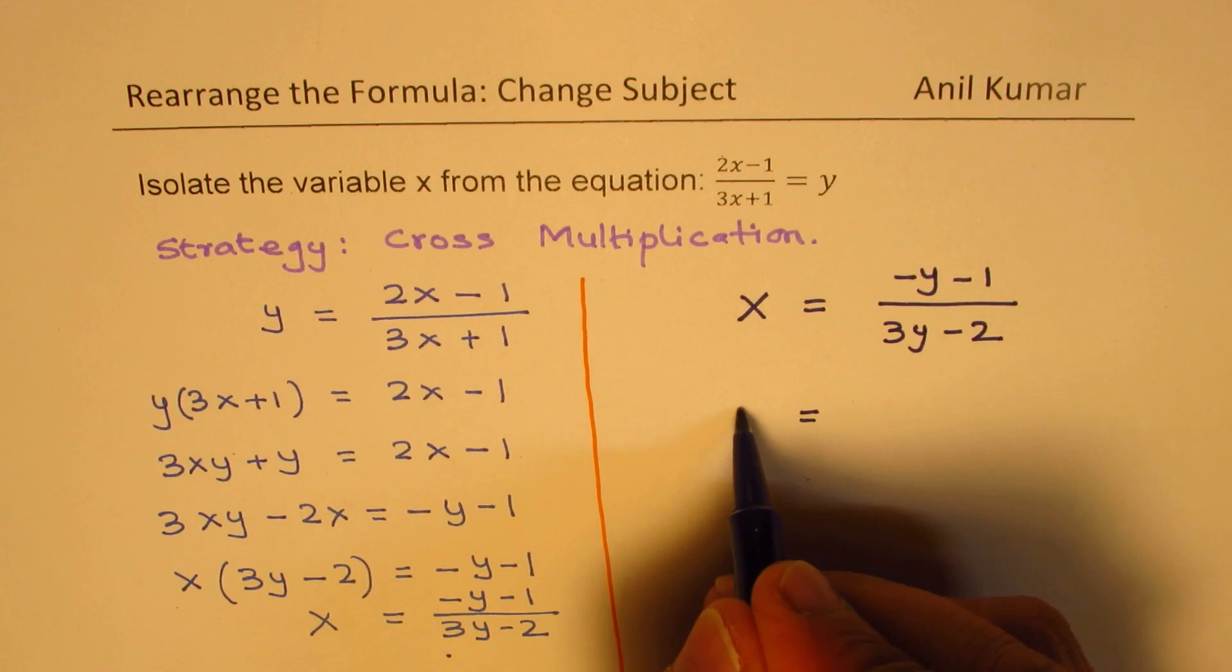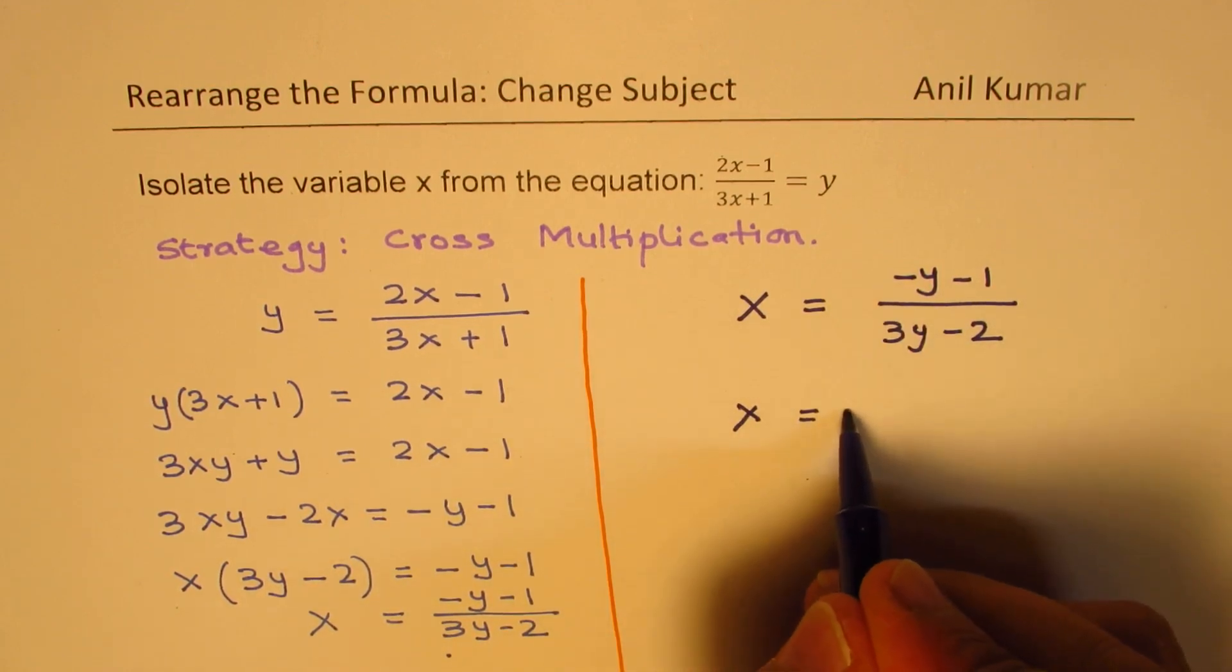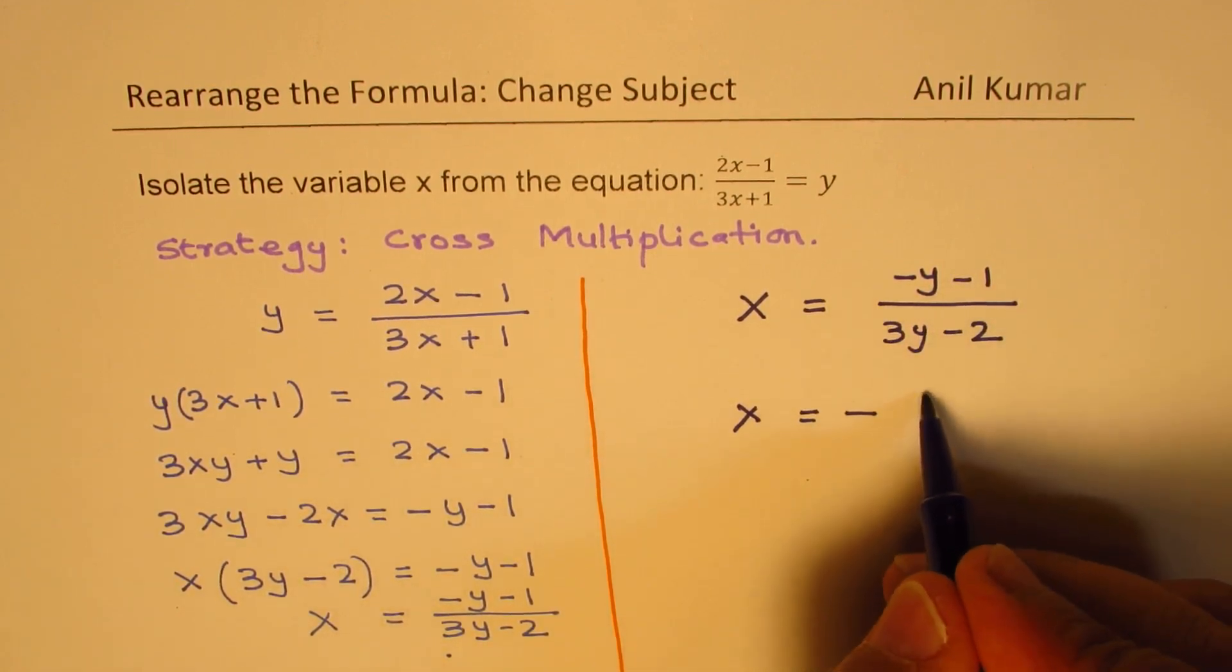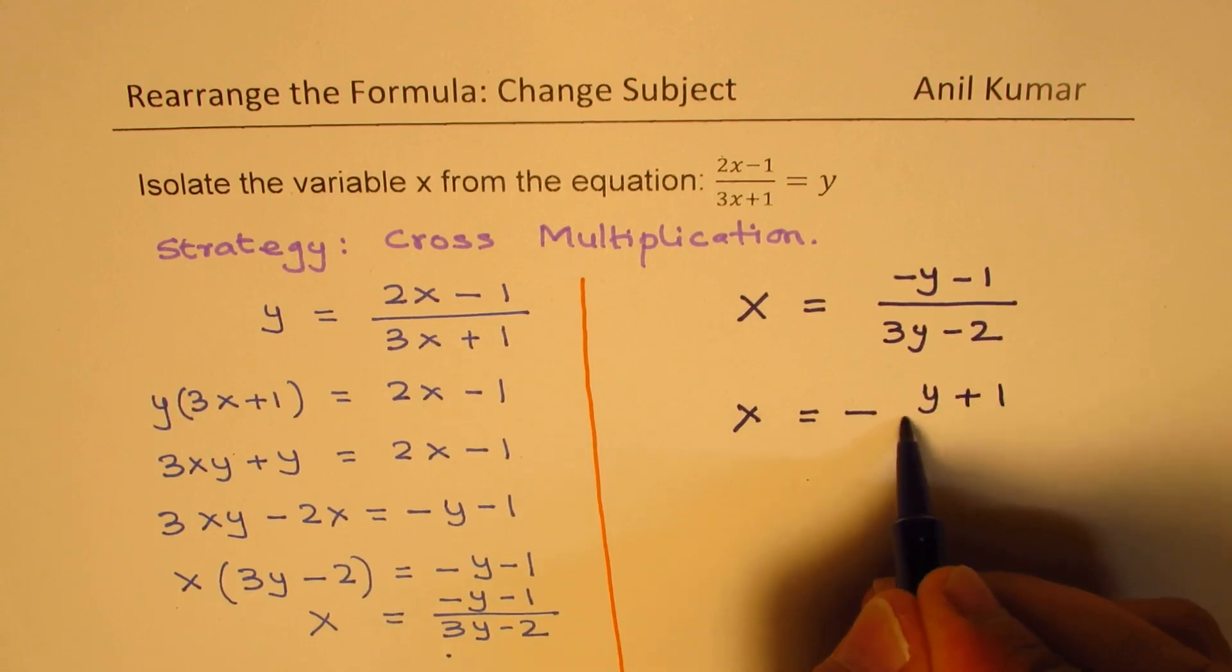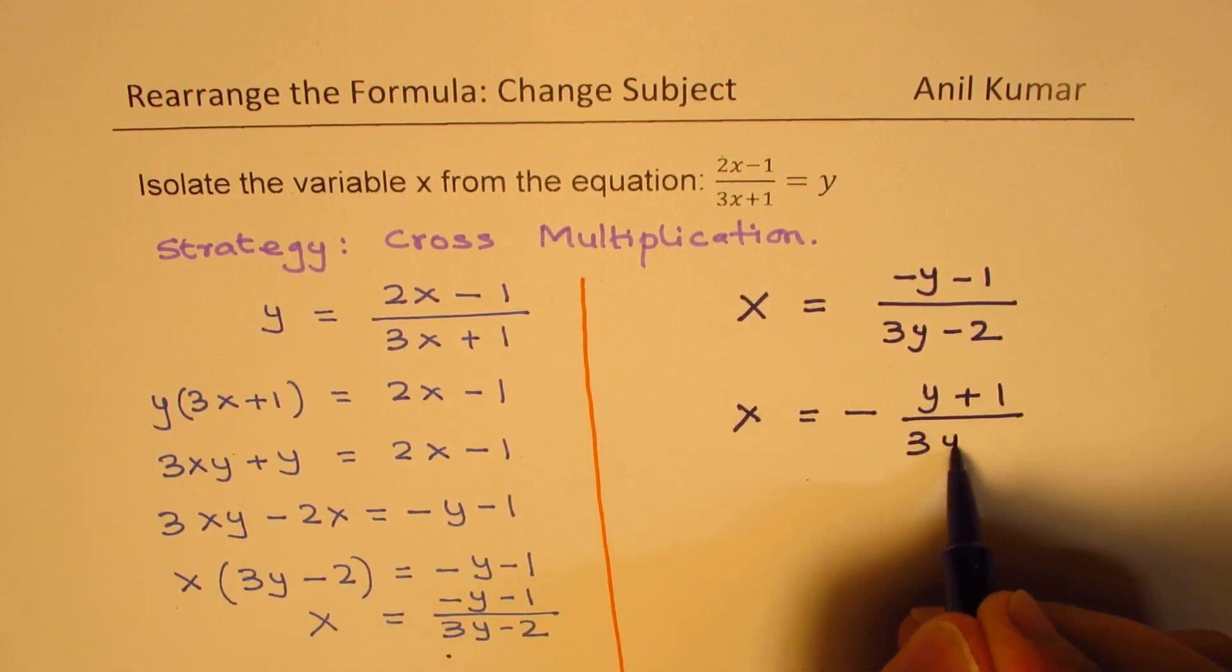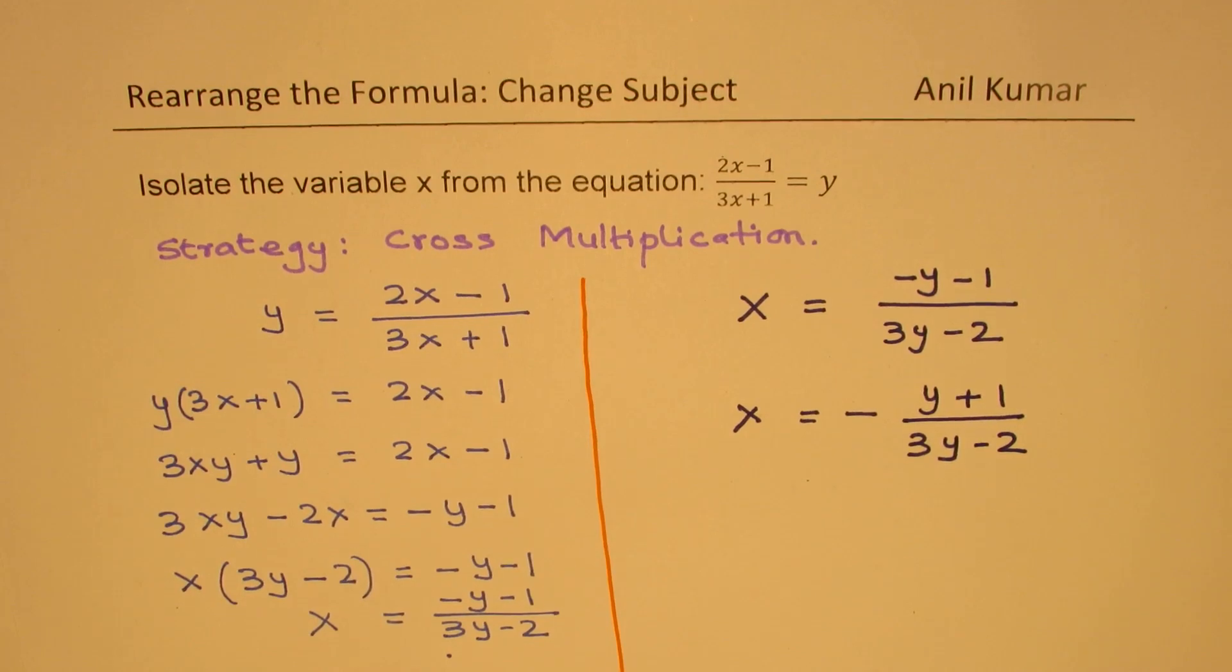One way is this. The other way could be we could just take minus common factor and so we get y plus 1 over 3y minus 2. Is that correct? Yes, it is.